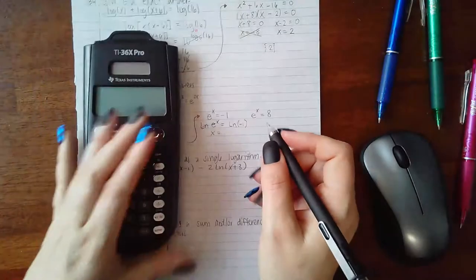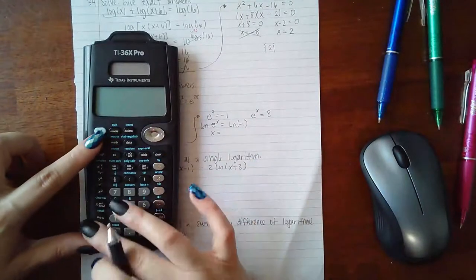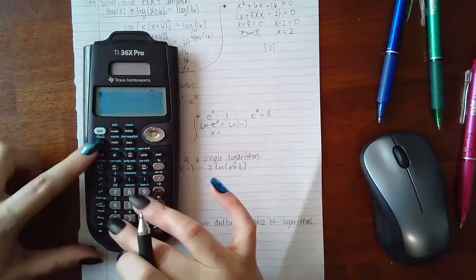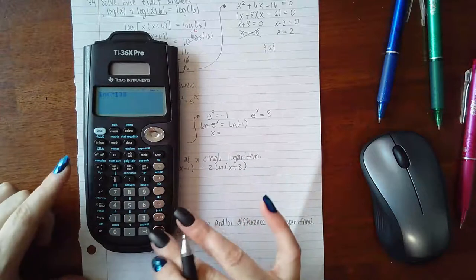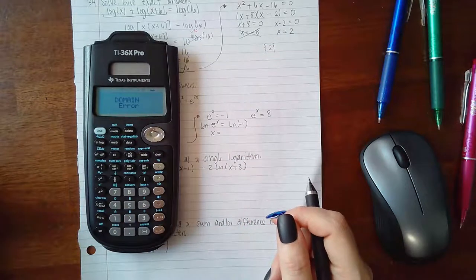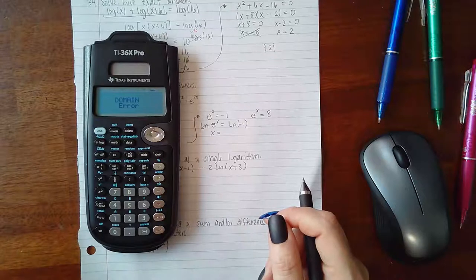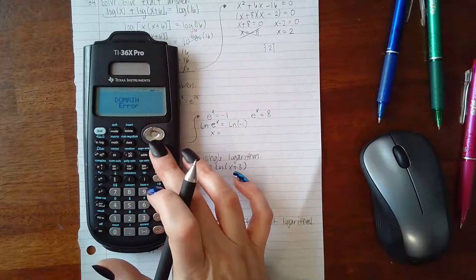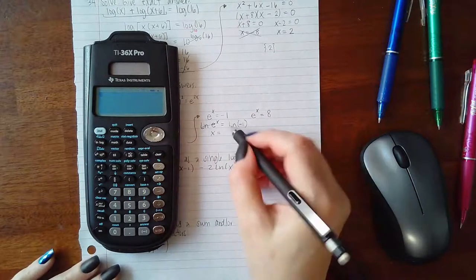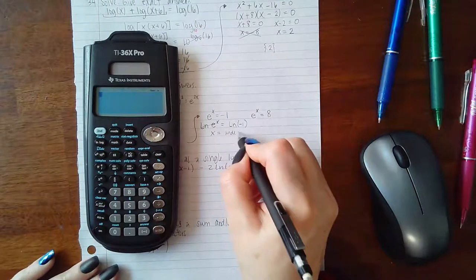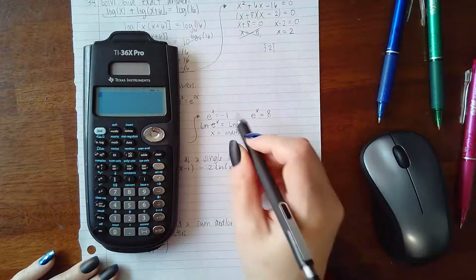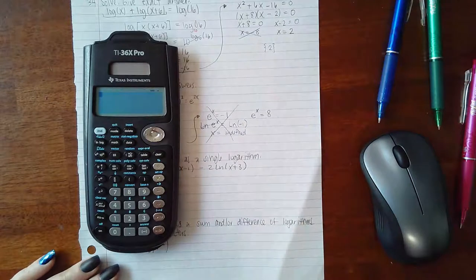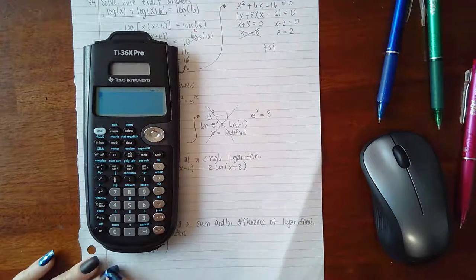However, when I try to type in ln of negative 1 in my calculator, look what it says. Error. Because remember, you cannot have a negative argument. This is undefined. Which means I'm not going to get any solutions from this particular factor.